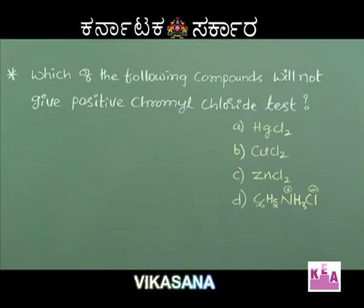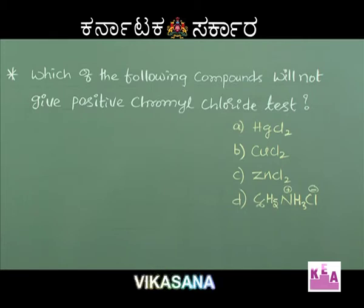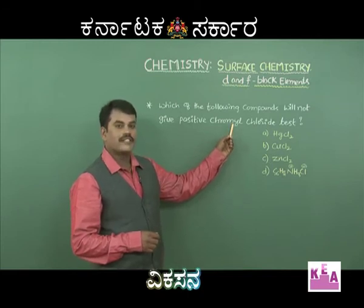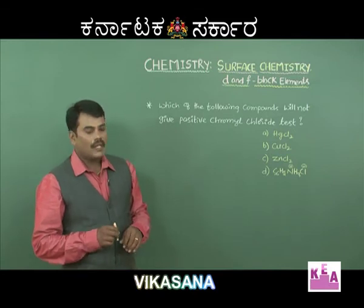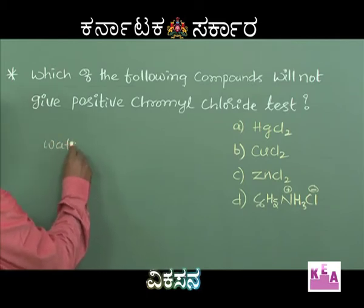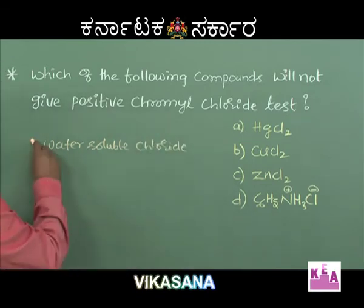The next question: which of the following compounds will not give a positive chromyl chloride test? Options are mercuric chloride, cupric chloride, zinc chloride, and anilinium hydrochloride. The chromyl chloride test is answered only by water-soluble chloride salts. Only water-soluble chloride salts will give this test; salts with covalent character will not.